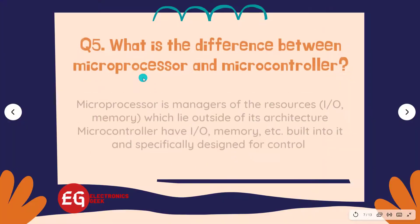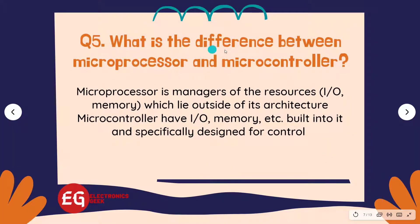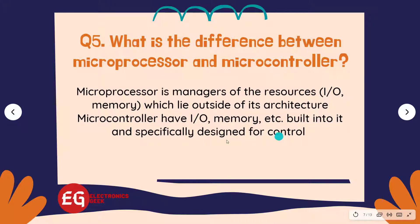Question 5: Mention what is the difference between a microprocessor and a microcontroller? Answer: A microprocessor is a manager of resources — IO, memory — which lie outside of its architecture. A microcontroller has IO, memory, etc., built into it and is specifically designed for control.